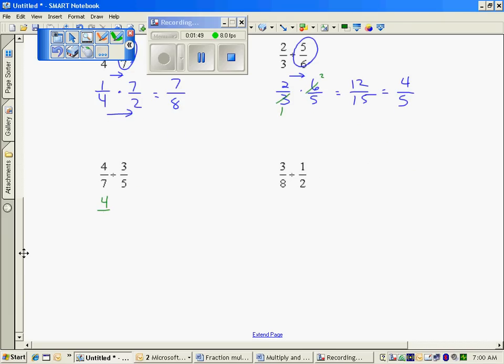Four sevenths times, again, the reciprocal of the second fraction. Multiplying straight across, twenty twenty-firsts.